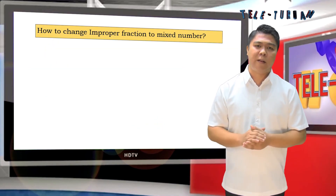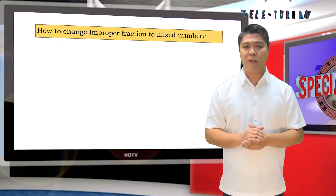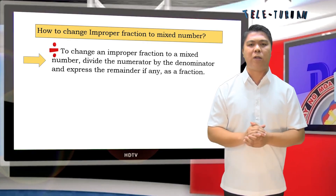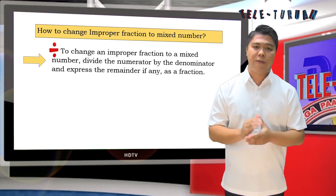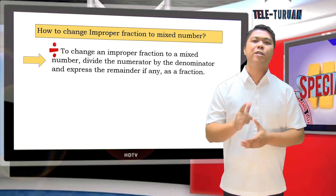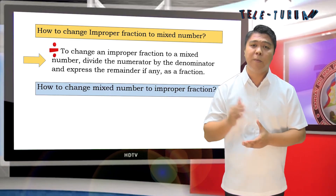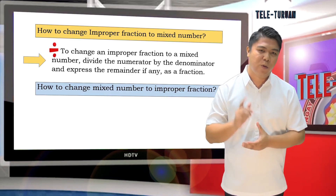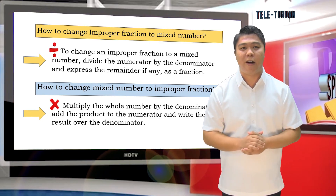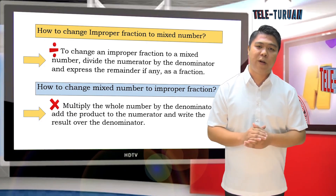You are doing great. Again, to change an improper fraction to a mixed number: divide the numerator by the denominator and express the remainder, if any, as a fraction. To change a mixed number to an improper fraction: multiply the whole number by the denominator, add the product to the numerator, and write the result over the denominator.